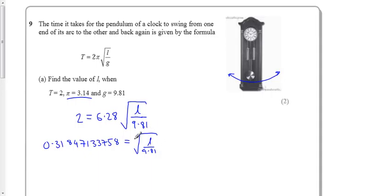So to do the opposite of square root, I'm going to square my answer. I get 0.101, 42399266. Now that I did the opposite of square root, this is now just L divided by 9.81.